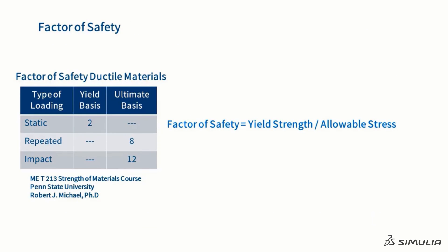We are now ready to use stress limits to design a structural part. To do that without explaining everything that you need to know about fatigue or dynamics, we will introduce the concept of a factor of safety. Depending on the type of loading, the factor of safety is defined as the yield strength divided by the allowable stress, or it is defined as the ultimate strength divided by the allowable stress.